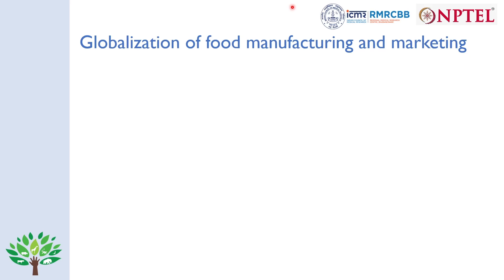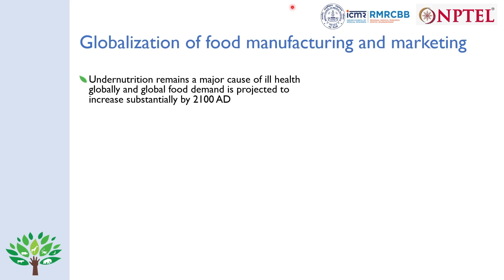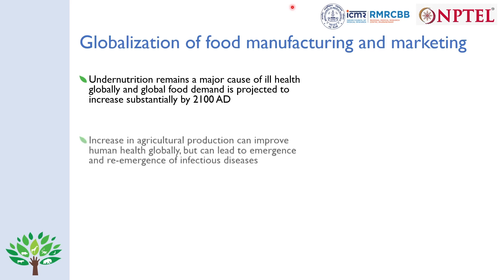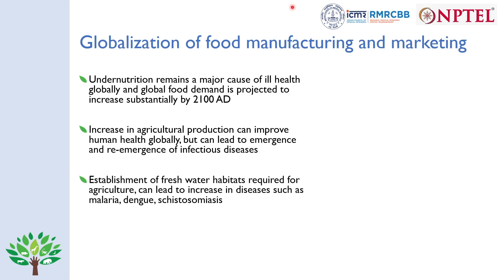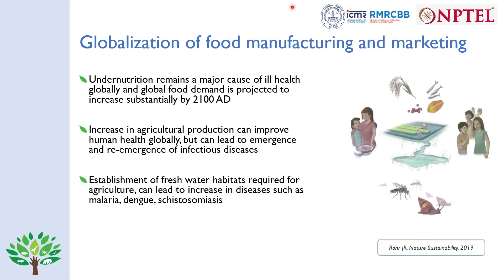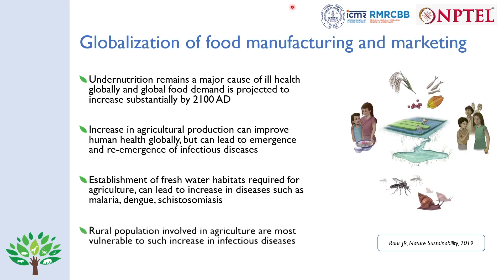The next factor is globalization of food manufacturing and marketing. Undernutrition remains a major cause of ill health globally, and global food demand is going to increase substantially by 2050. Increased agricultural production can improve human health but can also lead to emergence and re-emergence of infectious diseases — through deforestation, increased human contact with wild animals, and spread of diseases requiring freshwater habitats such as malaria, dengue, and schistosomiasis. Unfortunately, the rural populations where this agricultural production occurs will be the most vulnerable.